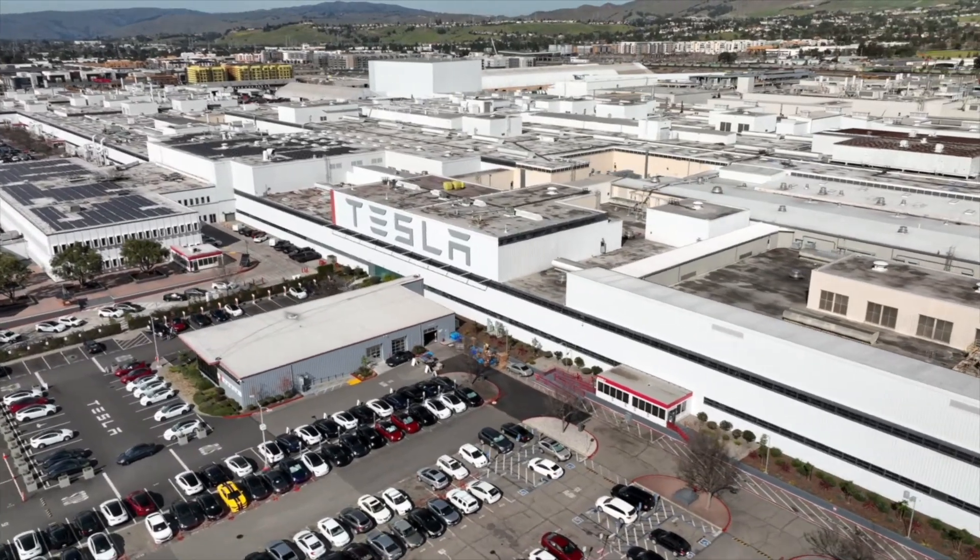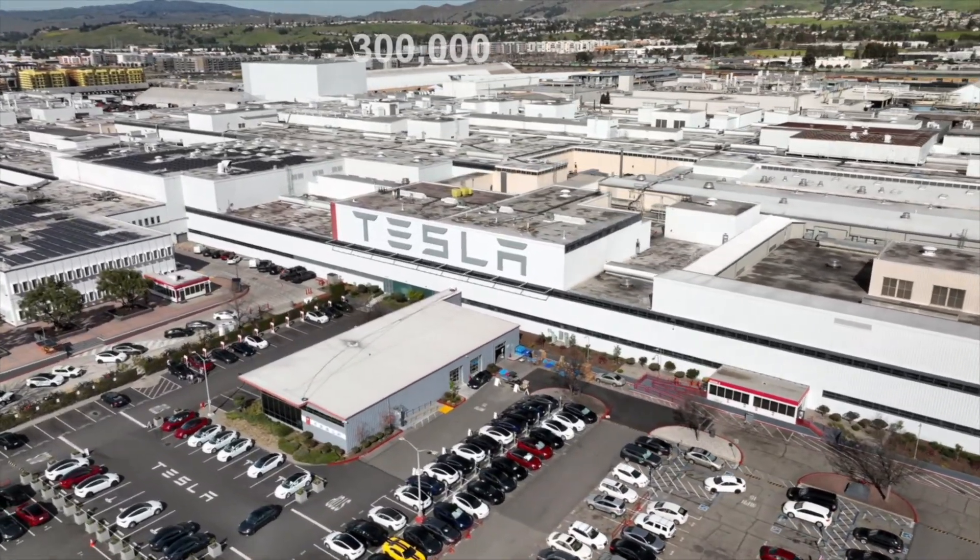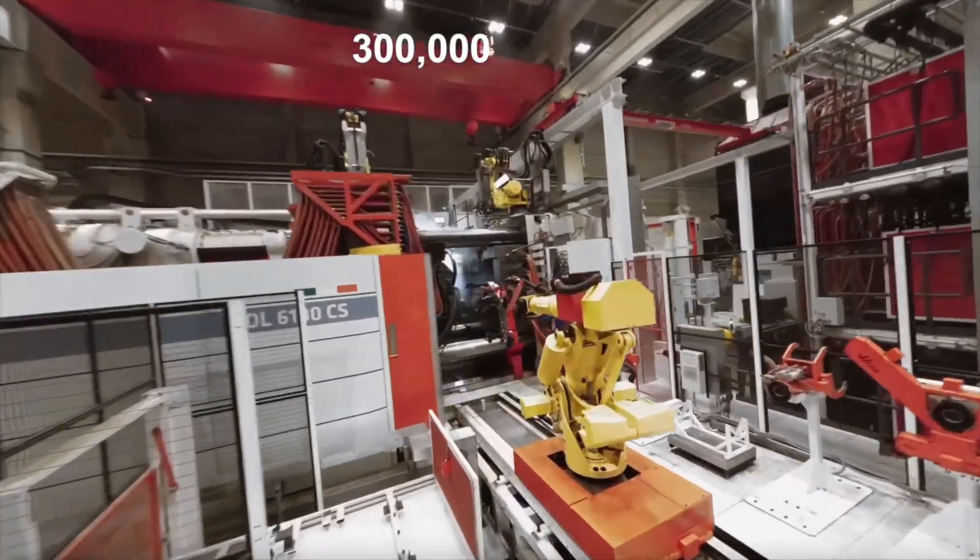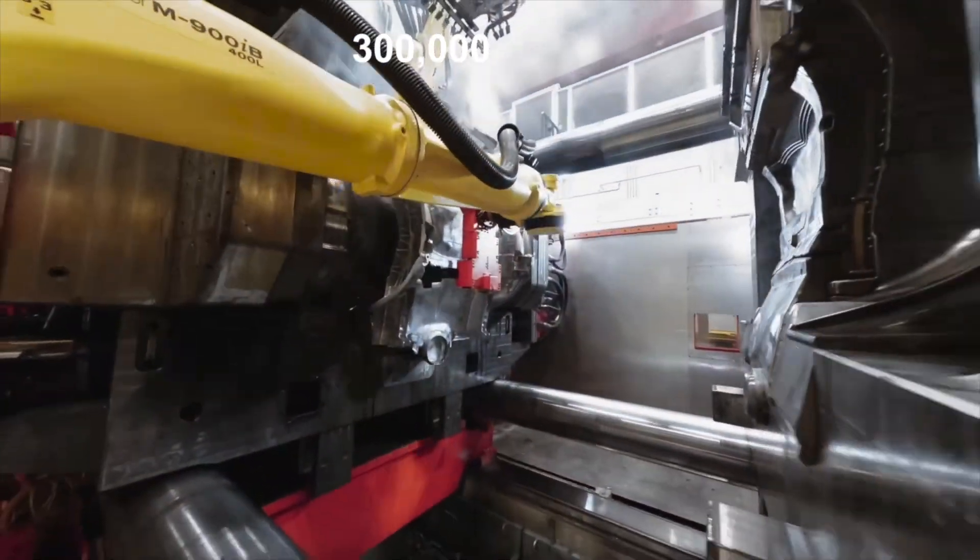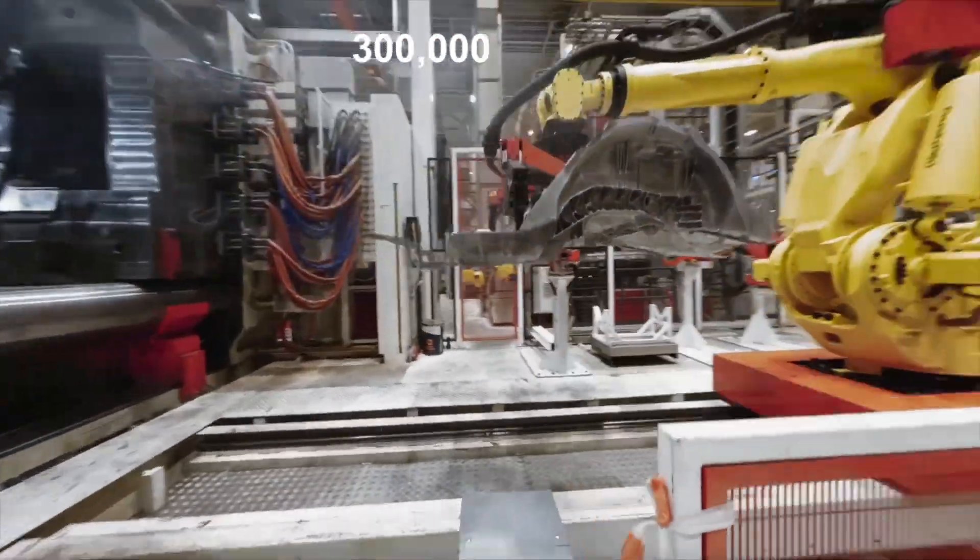The Tesla Fremont factory is the highest producing car plant in North America, manufacturing around 300,000 Tesla Model Y vehicles annually, the world's best-selling car. This immense production demand subjects factory equipment to a high number of cycles, making it vulnerable to fatigue failure.